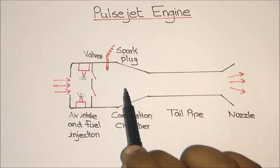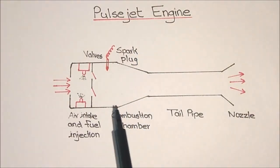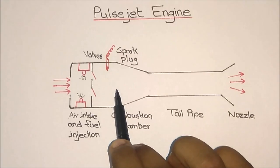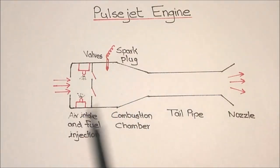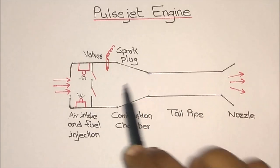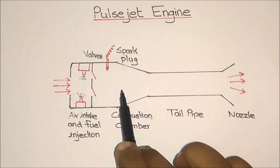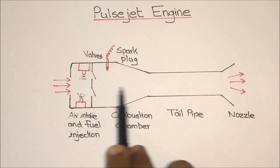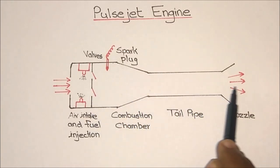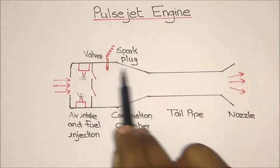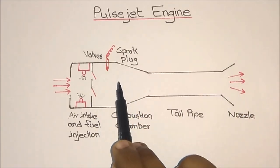Since the combustion in a pulsejet engine is nearly an explosion, the pressure as well as the temperature inside the combustion chamber will rise suddenly. Due to this sudden explosion, the gases generated by the combustion process will accelerate through the tail pipe.